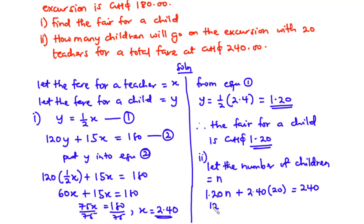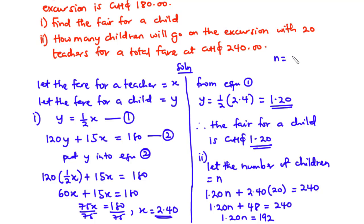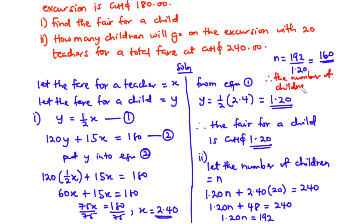Expanding: 1.20n plus 2.40 times 20 equals 1.20n plus 48 equals 240. Transposing 48 to the right-hand side: 1.20n equals 240 minus 48, which is 192. So n equals 192 divided by 1.20, giving n equals 160. Therefore, the number of children who can join 20 teachers for the excursion is 160.